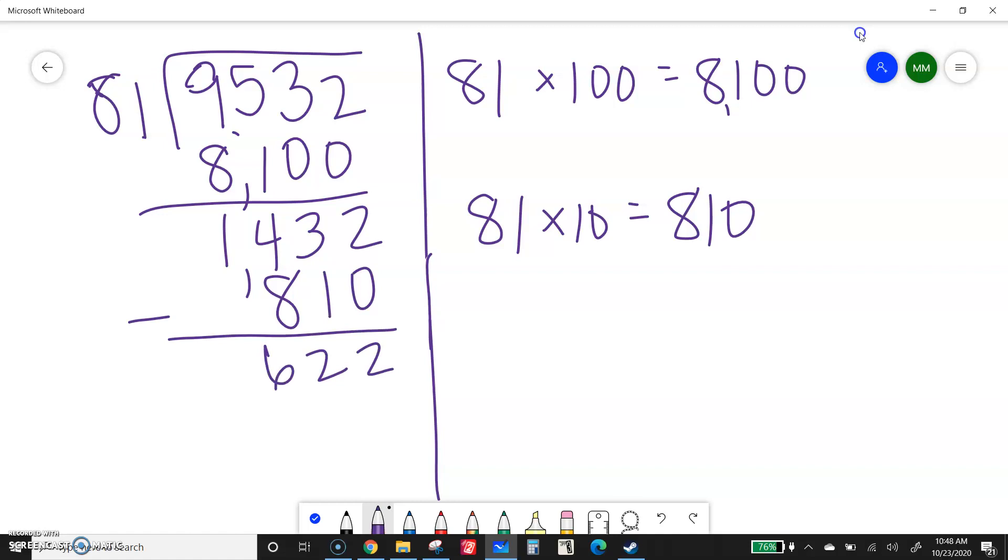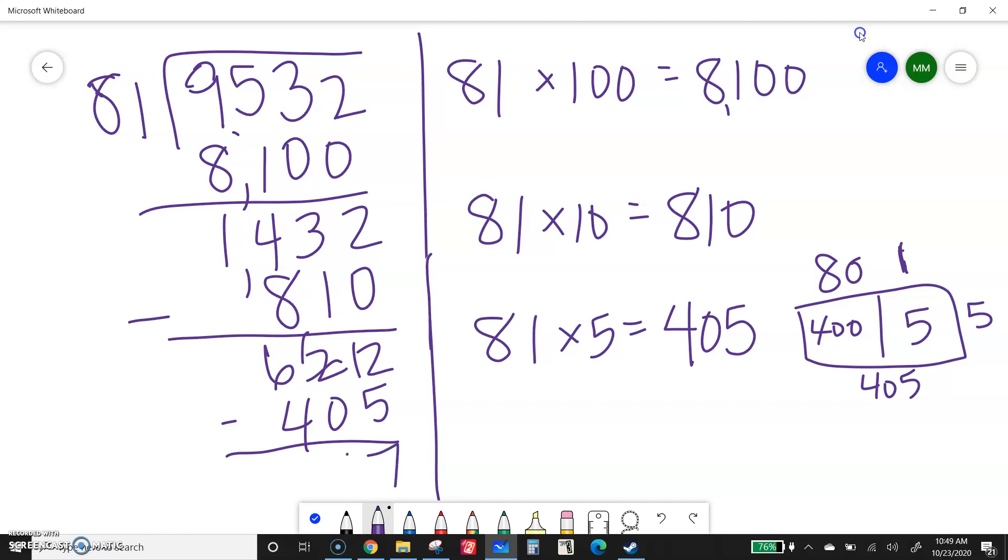Okay I can't even do 10 on this one. So what if I do let's try 81 times 5. 1 times 5 is 5. 80 times 5 is 400. So that's 405. Let's do that. Notice I did the window method. Any method is fine to do those multiplying to figure it out. So I'm going to subtract 405. 1. 12 minus 5 is 7. 1 and 2.